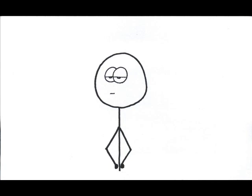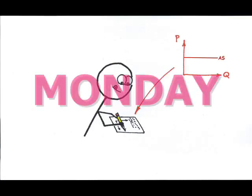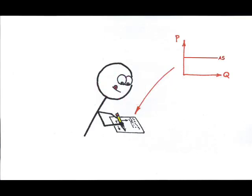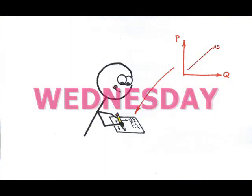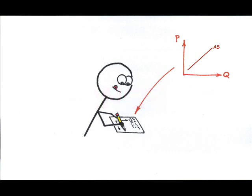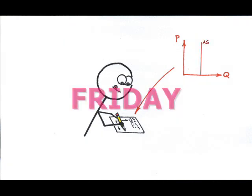I would come to class on Monday and scribble furiously as the professor lectured. Today we're doing aggregate supply, a relationship between the price level and the GDP. Wednesday I come to class and scribble furiously. Today we're talking about the aggregate supply, a relationship between the price level and the GDP. Then Friday, I show up and scribble some more. Today we're talking about aggregate supply, a relationship between price level and the GDP.